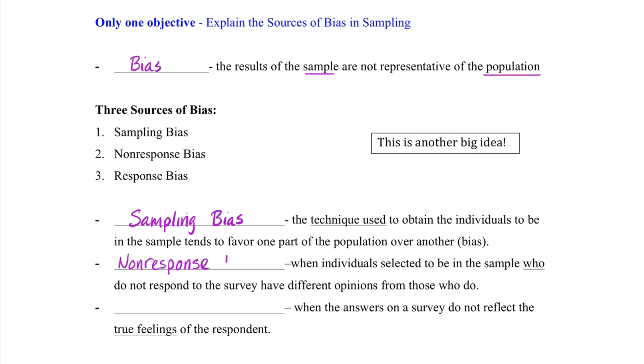Non-response bias occurs when individuals selected to be in the sample who do not respond to the survey have different opinions from those who do. We know we can't get everyone to respond to some survey we're trying to collect. What happens is when those who don't respond have a different opinion from those who do, we end up with a misrepresentation, which again would be our bias.